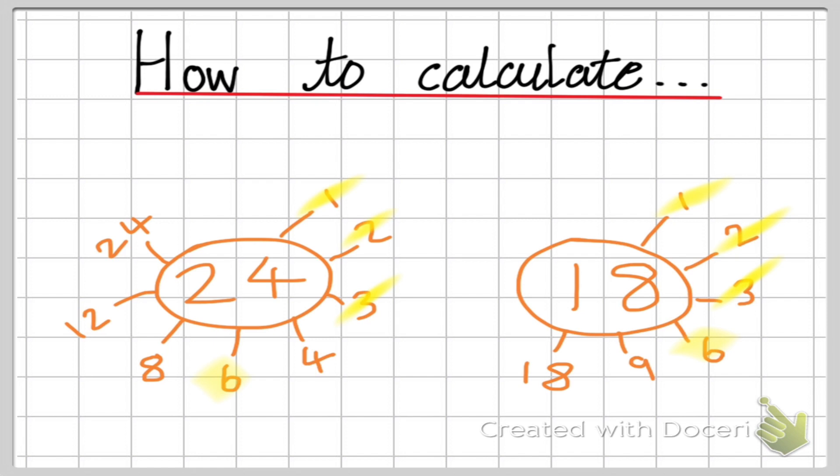And the greatest number, so the largest number, is 6. So the greatest common factor between 24 and 18 is 6.